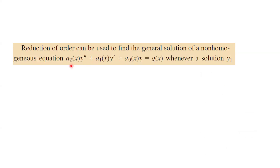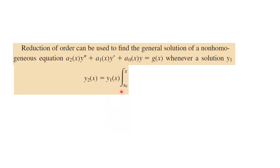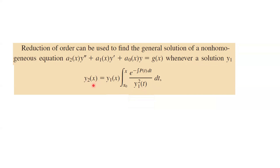Remember, in using the reduction of order method, when you have a differential equation of second order of the form a₂(x)y'' + a₁(x)y' + a₀(x)y = g(x), and whenever you have one solution y₁, you can find the second solution using y₁ times the integral of e^(−∫P(t)dt) divided by y₁² dt. We're going to use this to find the solution for a second-order differential equation with constant coefficients.